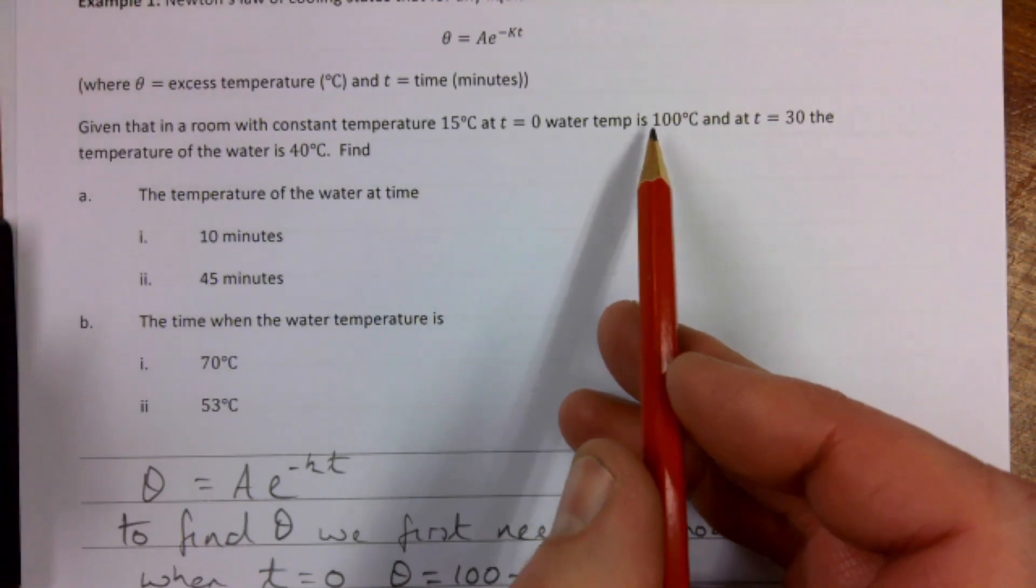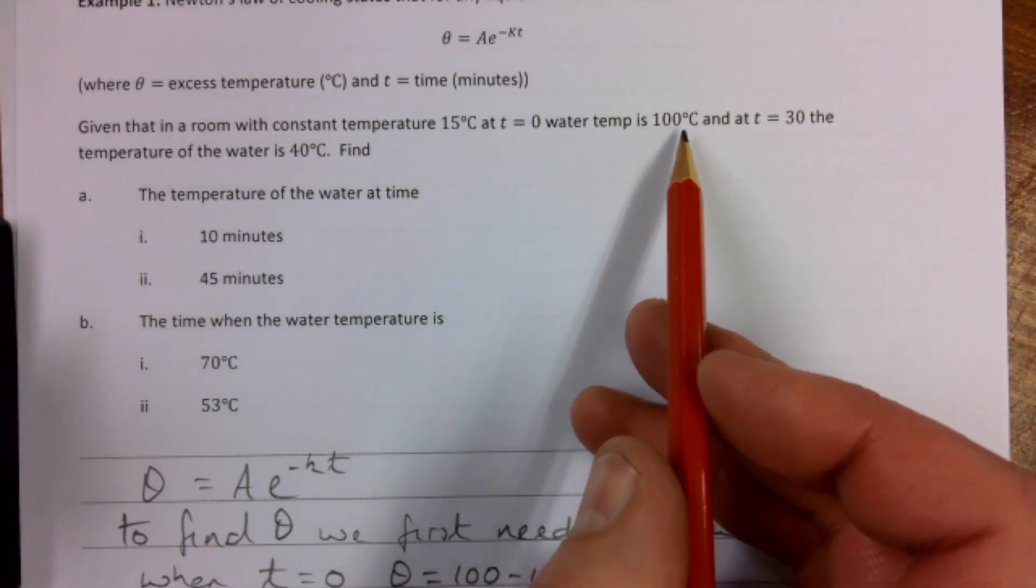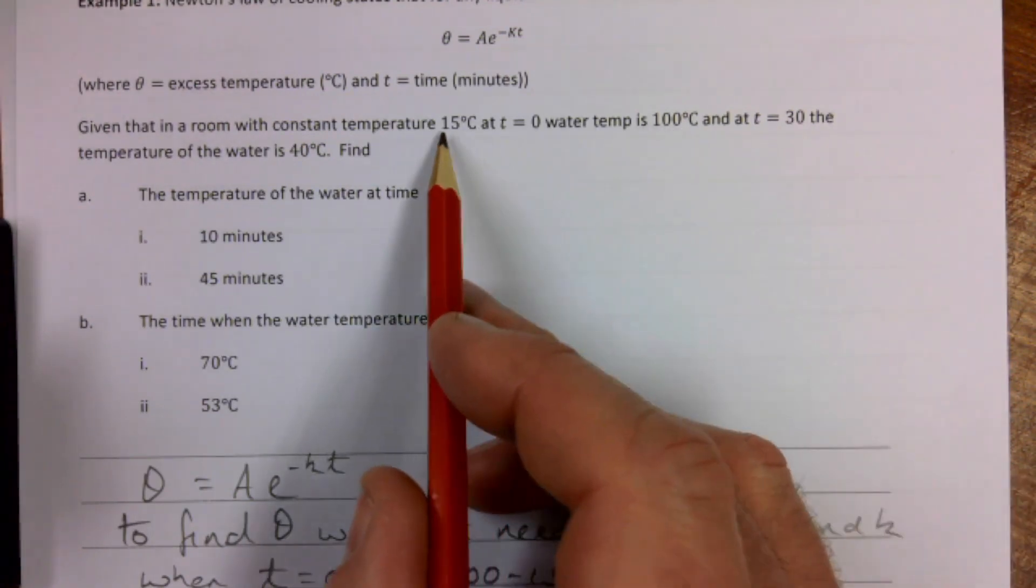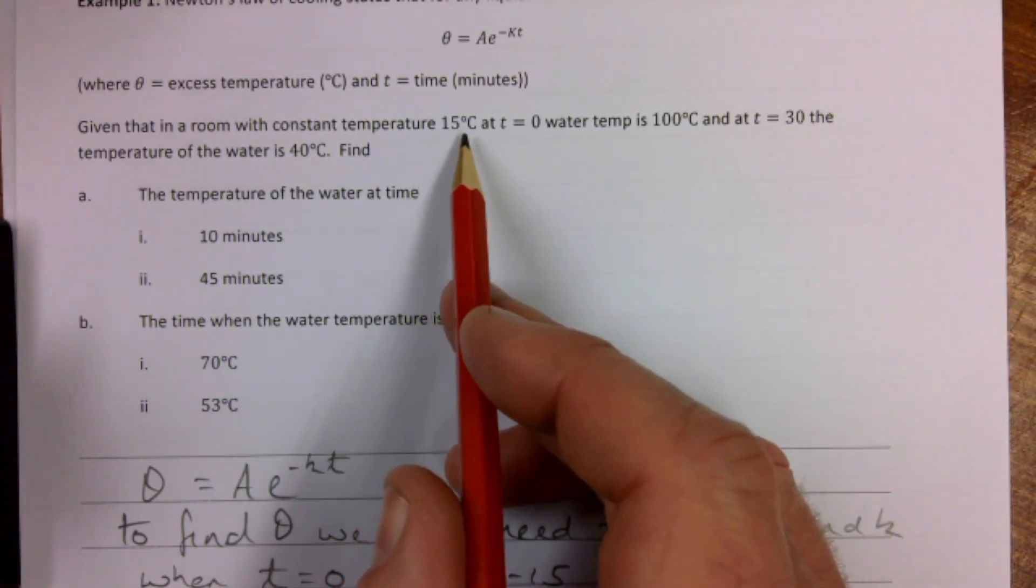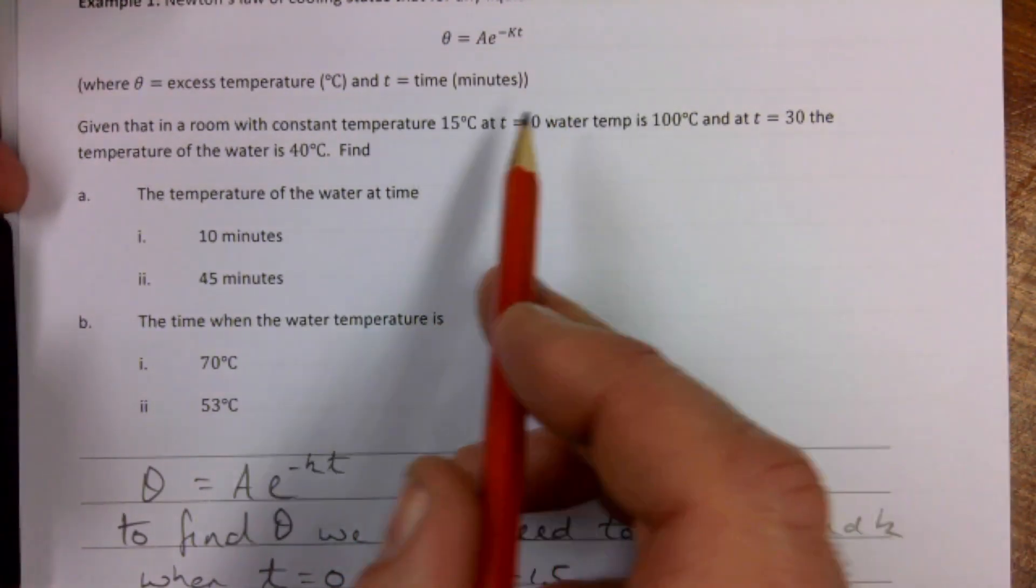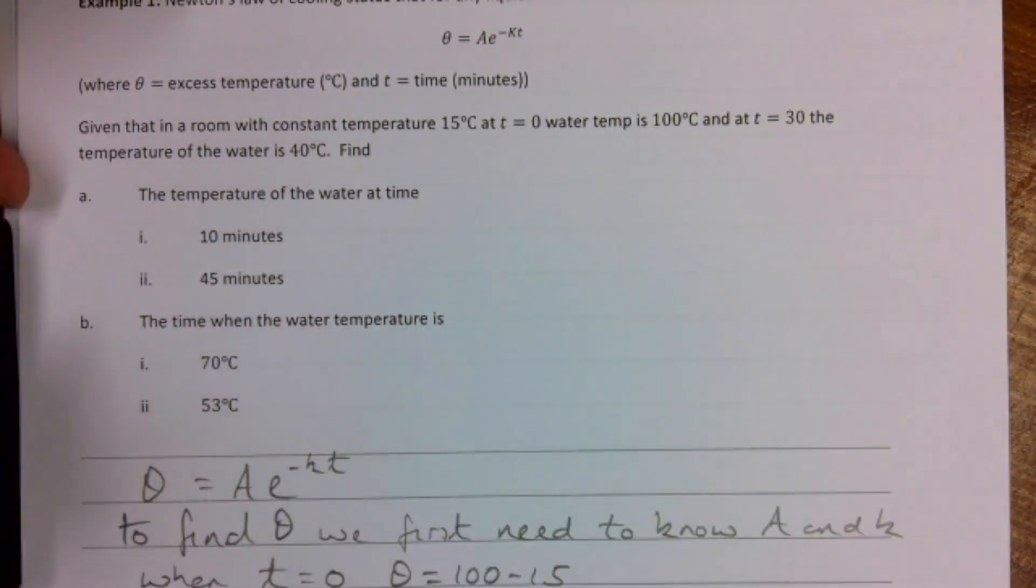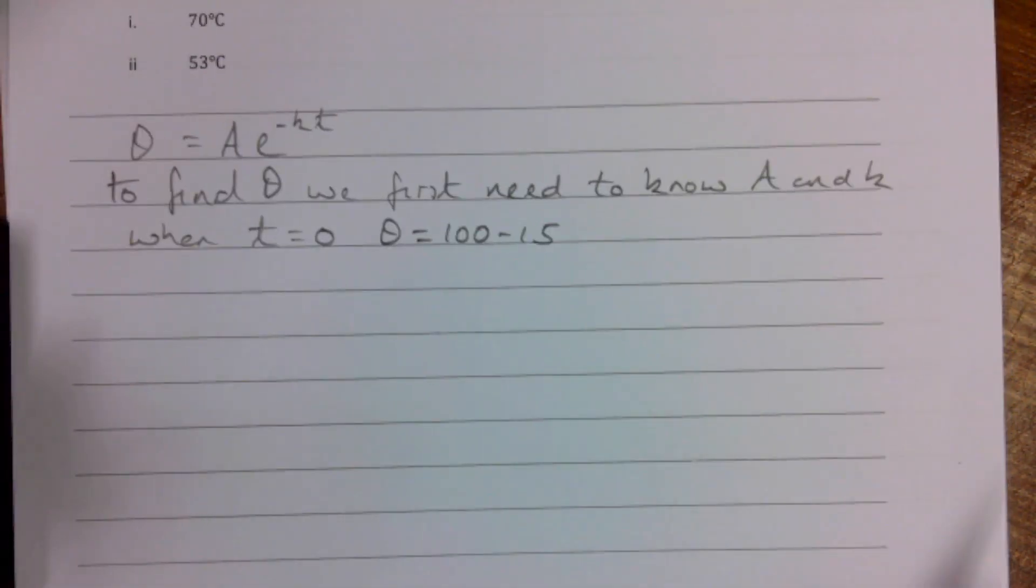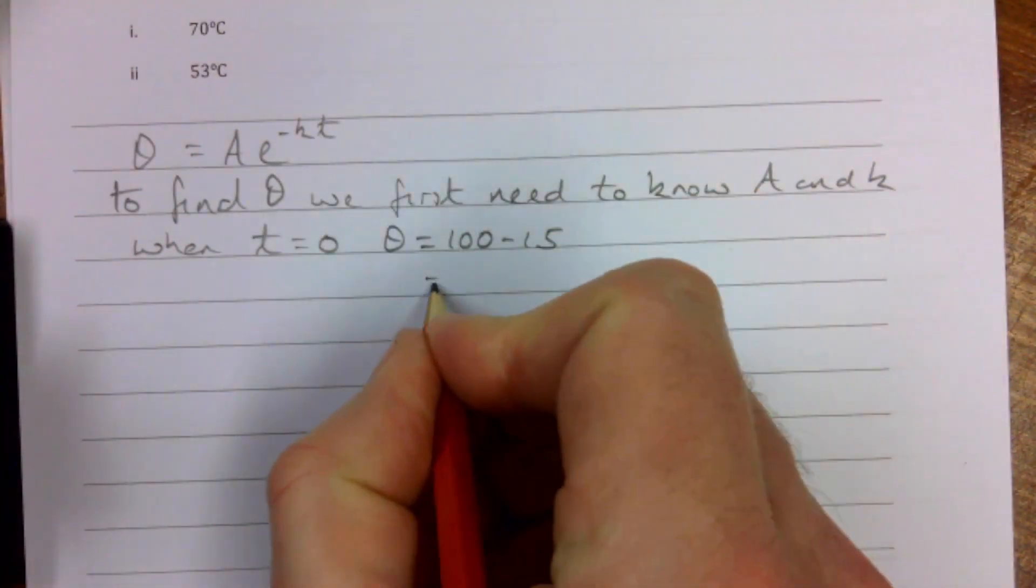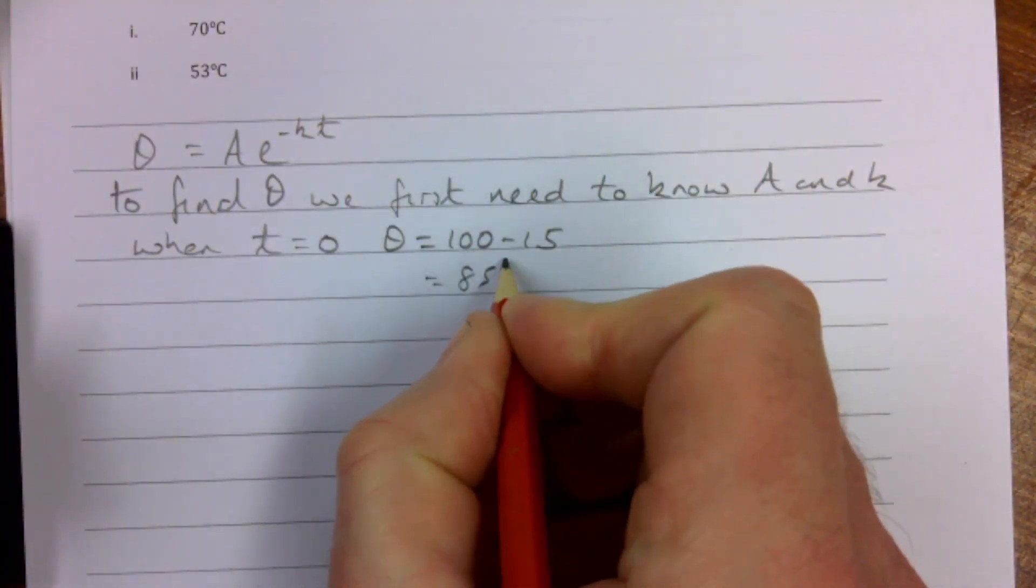Obviously this 100 degrees, say you have a cup of boiling water, it just cools down and cools down. How low is it going to go? It's not going to go below the room temperature. That wouldn't make sense. So the θ here is our excess temperature. So how much higher is this than 15? So it's obviously 100 - 15, and that gives us 85°C.